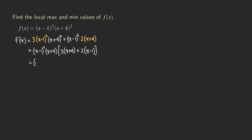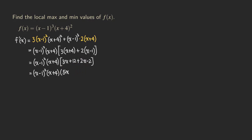So now we just need to simplify this. We are getting (x minus one) squared times (x plus four). Then distributing, we get three x plus 12 plus two x minus two. Combining like terms, we are going to be getting 5x plus 10. You can also factor out the five, so we get a factor of five in the front: five times (x minus one) squared times (x plus four) times (x plus two) after factoring out the five.